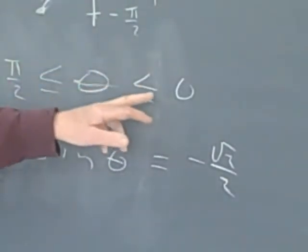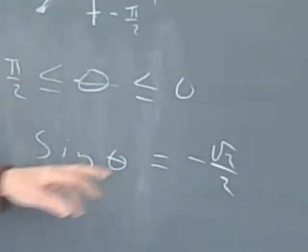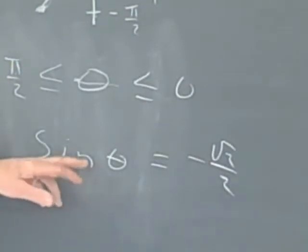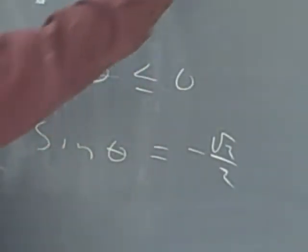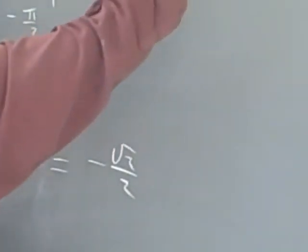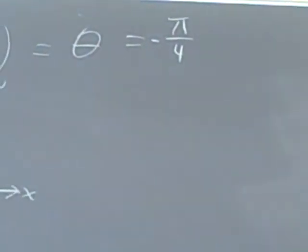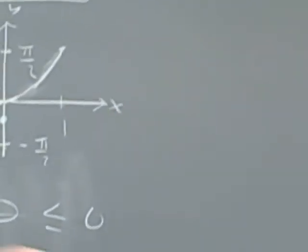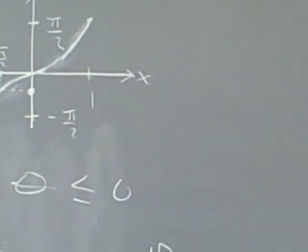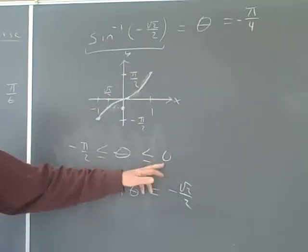But this is an angle between negative pi over 2 and 0. And it's negative, so what it would have to be is negative pi over 4. The sine of negative pi over 4 will give you negative root 2 over 2. And it is between negative pi over 2 and 0.